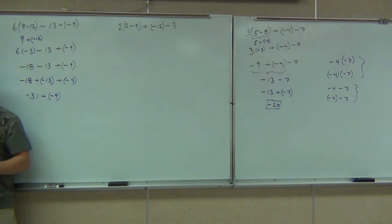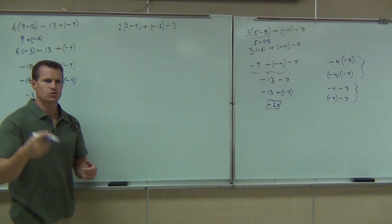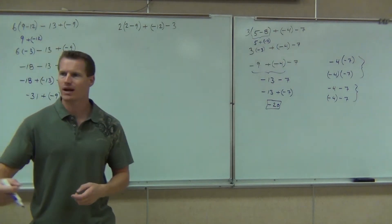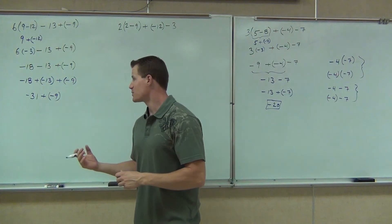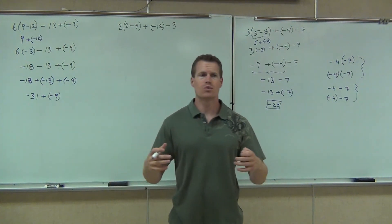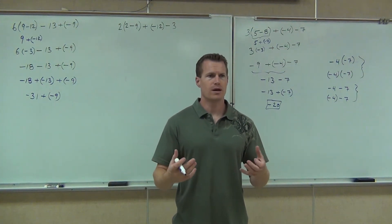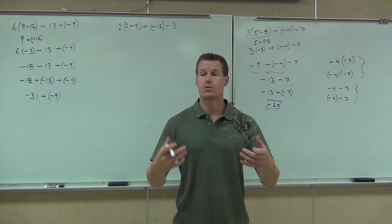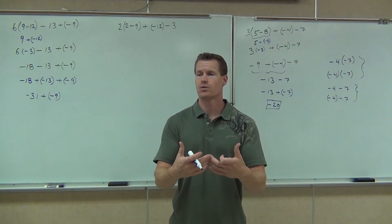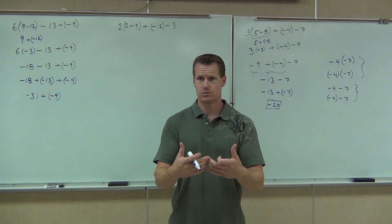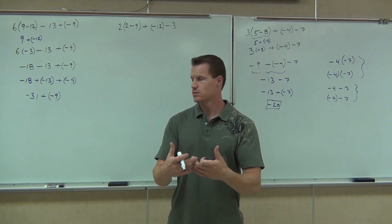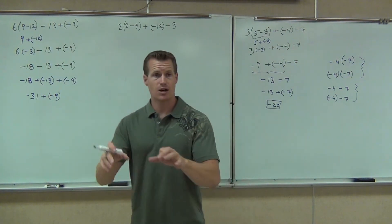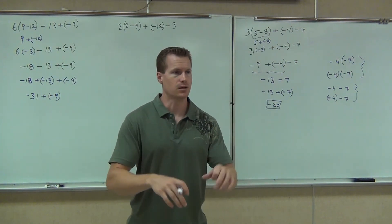Lastly, I've got negative 31 plus negative 9. Again, that's the addition rule — we like the addition rule. The addition rule has those two rules; we can really get the right answer every time. We get the same sign again, so we're going to add, keep the common sign. We've got negative 40.